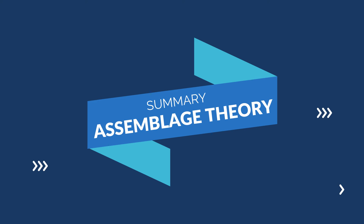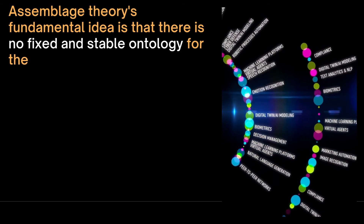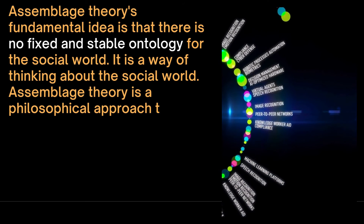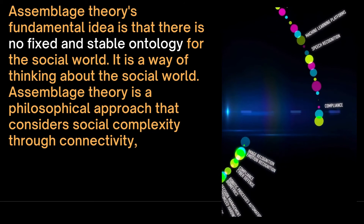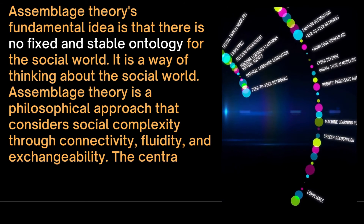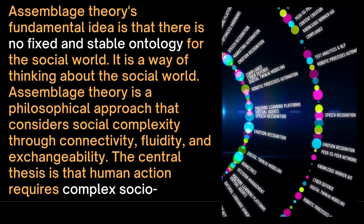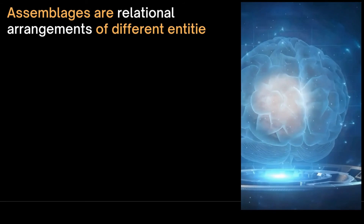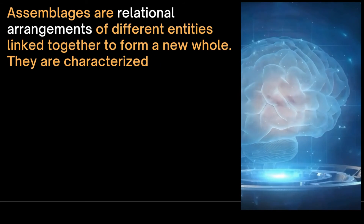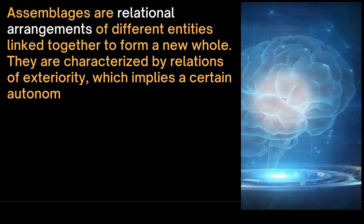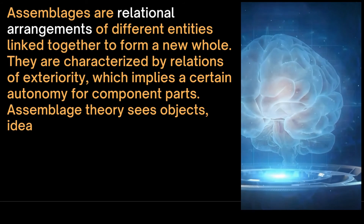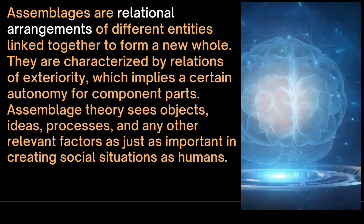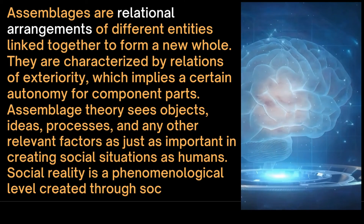To summarize, assemblage theory's fundamental idea is that there is no fixed and stable ontology for the social world — it is a way of thinking about social complexity through connectivity, fluidity and exchangeability. The central thesis is that human action requires complex socio-material interdependencies. Assemblages are relational arrangements of different entities linked together to form a new whole, characterized by relations of exteriority which imply a certain autonomy for component parts. Assemblage theory sees objects, ideas, processes, and any other relevant factors as just as important in creating social situations as humans. Social reality is a phenomenological level created through social interaction.